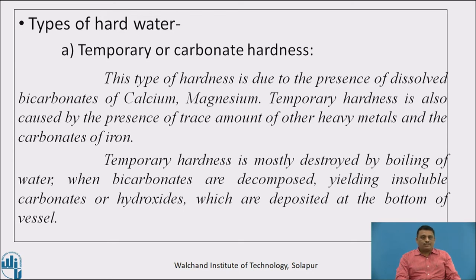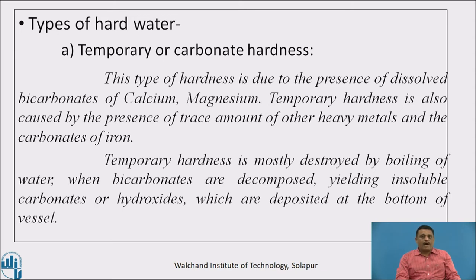Now we will see the types of hard water. The first type is temporary or carbonate hardness, and the second is permanent or non-carbonate hardness. Temporary hardness is due to the presence of dissolved bicarbonates of calcium and magnesium, and also caused by trace amounts of other heavy metal ions and carbonates of iron. Temporary hardness is mostly destroyed by boiling — bicarbonates decompose yielding insoluble carbonates or hydroxides which deposit at the bottom of the vessel.